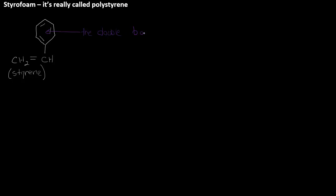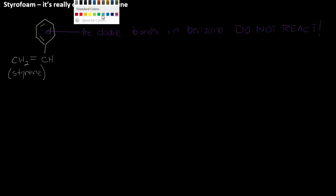The double bonds in benzene don't react. So this we looked at when we introduced benzene. They will do nothing, so they're not going to be subject to the polymerization reaction. They don't undergo the alkene addition reaction. So what part of styrene reacts?